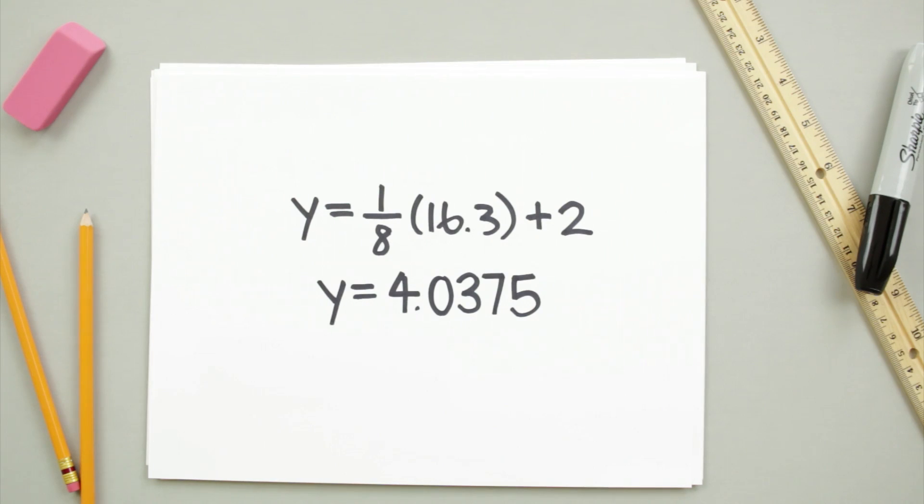This method isn't going to give you the exact value of y on the original function, but since the square root of 16 is so close, the linear approximation will give you a pretty good estimate about the square root of 16.3.